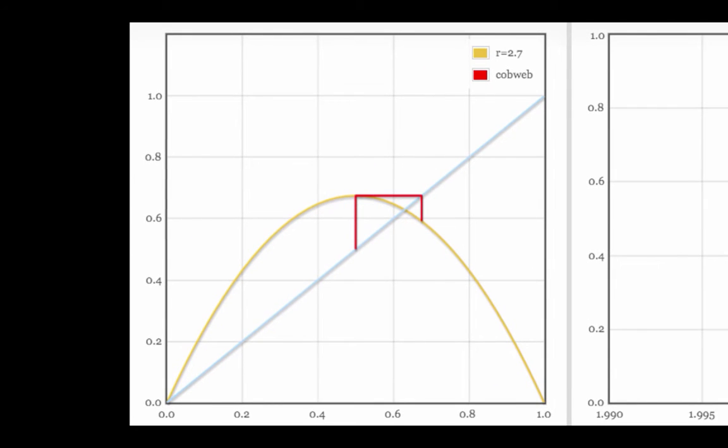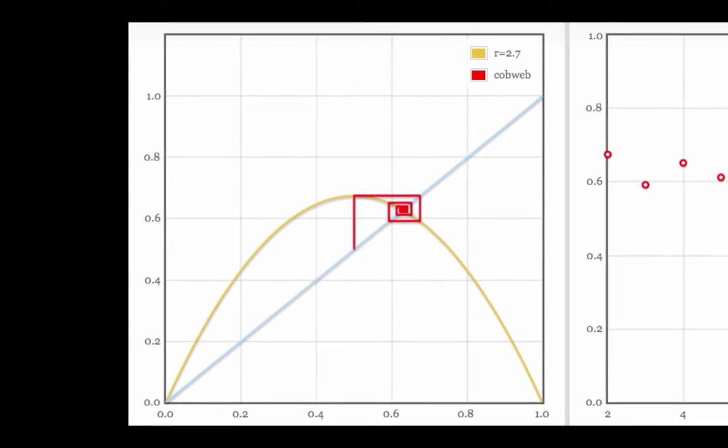As we slowly add single iterates to this map, what we see in the Cobweb Diagram is the red lines slowly spiraling into the intersection of the line xn plus 1 equals xn and the parabola defined by the logistic map.